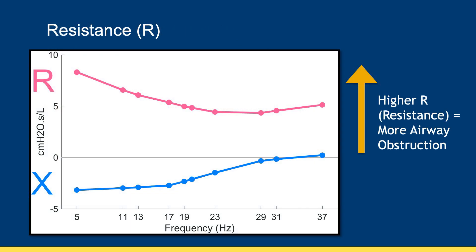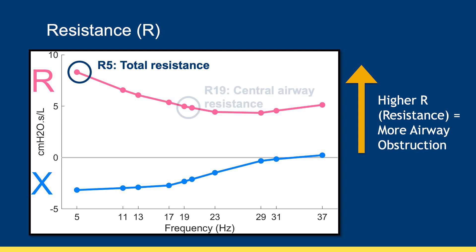Resistance, or R, reflects the degree of airway obstruction in the lungs; higher values in R mean increased airway obstruction. R measured at a low frequency of 5 or 7 hertz represents the total airway resistance or obstruction in the respiratory system, from the central airways to the distal regions of the lung, because low frequency oscillations travel farther into the smaller airways. R measured at higher frequencies of 19 or 20 hertz represents the level of obstruction in the central airways, because higher frequency oscillations do not travel as far into the peripheral airways and air spaces.